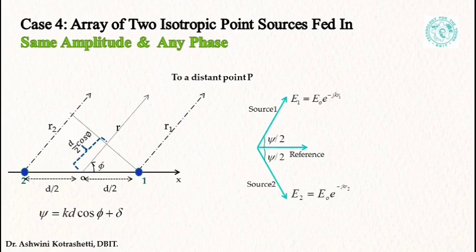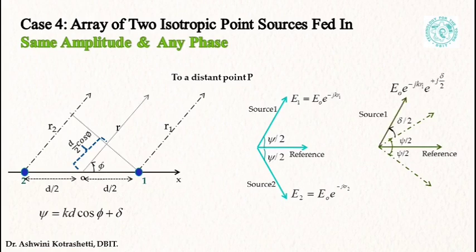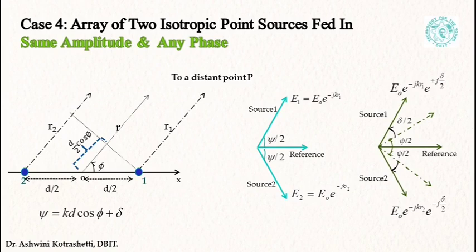Let's understand this through a vector diagram. The vector diagram currently shown is for the case of equal amplitude and phase feeding. Now we'll consider a case where we have introduced a phase difference of delta. So I have the reference for equal phase and equal amplitude feeding, and now we have included a phase difference of delta by 2 on either side.